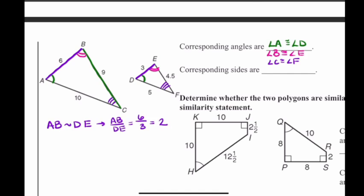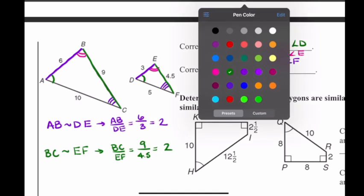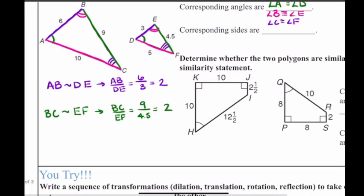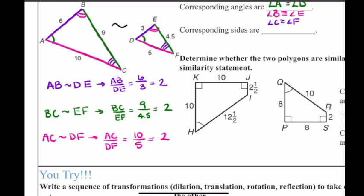BC is similar to EF. Dividing BC by EF: BC is 9, EF is 4.5, giving us 2 again. Finally, AC is similar to DF. Dividing AC by DF: AC is 10, DF is 5, and 10 divided by 5 is 2. So I can say that triangle ABC is similar to triangle DEF — if I dilate triangle DEF by a scale factor of 2, I get triangle ABC.